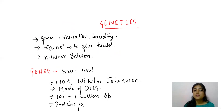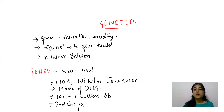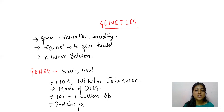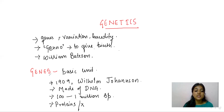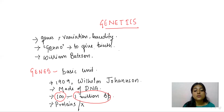To revise: genetics is a branch of biology that deals with the study of genes, variation, and heredity. The term 'genetic' came from 'geno,' meaning to give birth, and was first used by William Bateson. Genes are defined as the basic physical and functional unit of inheritance; Wilhelm Johansson coined the term in 1909. Genes are made up of DNA, varying from 100 to a million base pairs. Some genes code for proteins, while some do not.